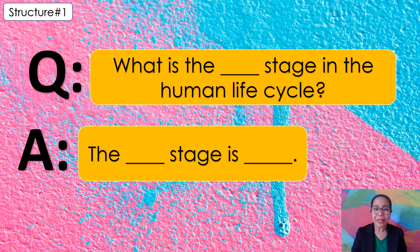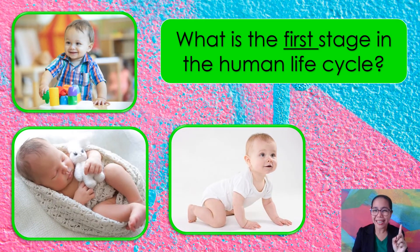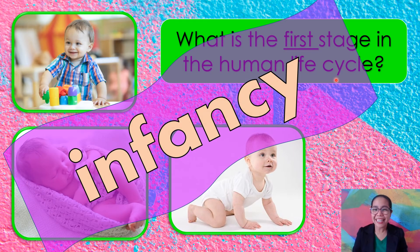For our structure number one, the question is: what is the blank stage in the human life cycle? You are going to answer: the blank stage is blank. For example: what is the first stage in the human life cycle? The answer is infancy. The first stage is infancy.